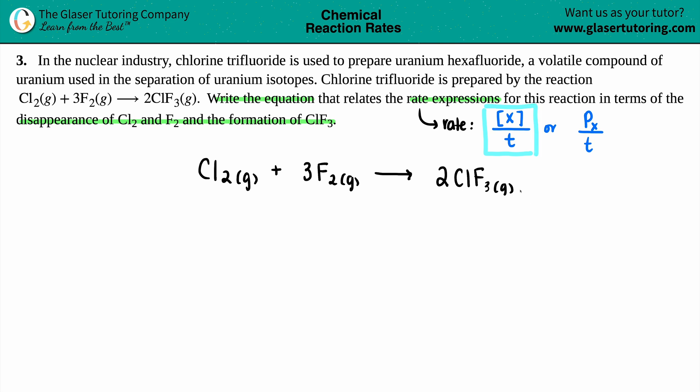Now, the next thing is we just have to convert all of these three substances into their rates. Keep in mind that it's just a certain type of concentration over a period of time. So for Cl2, I'm just going to say that I had a certain amount of chloride, Cl2, over a certain amount of time.